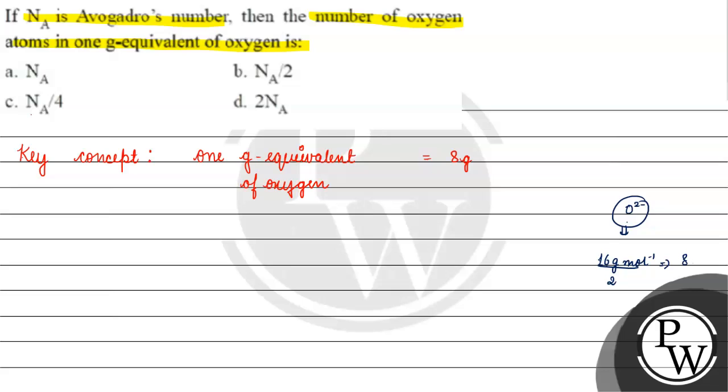Because of this, one gram equivalent or the equivalent mass of oxygen comes out to be 8 grams per equivalent.